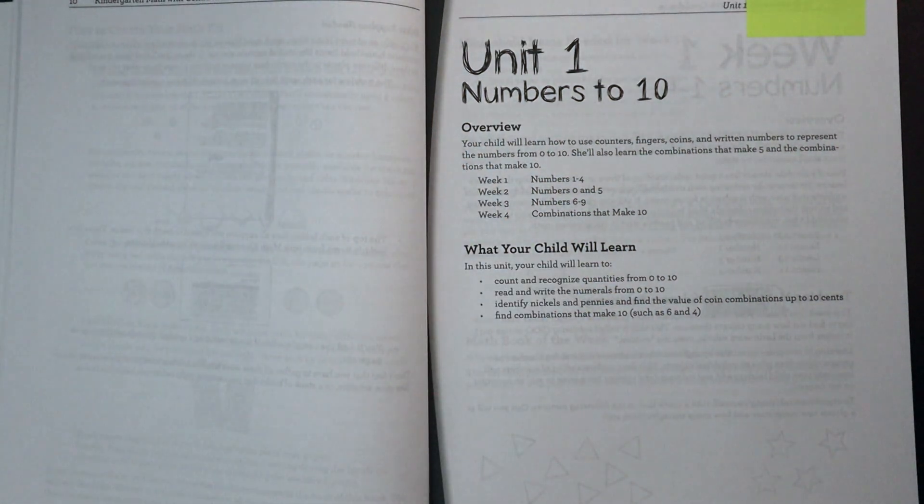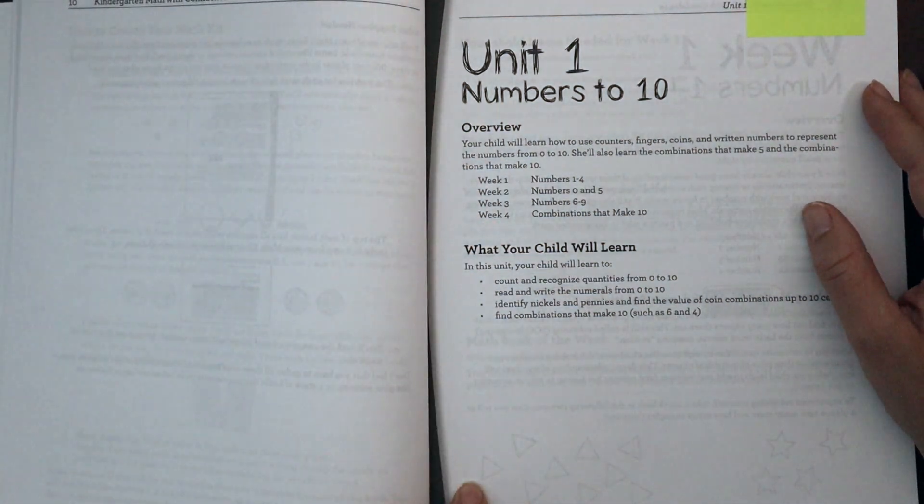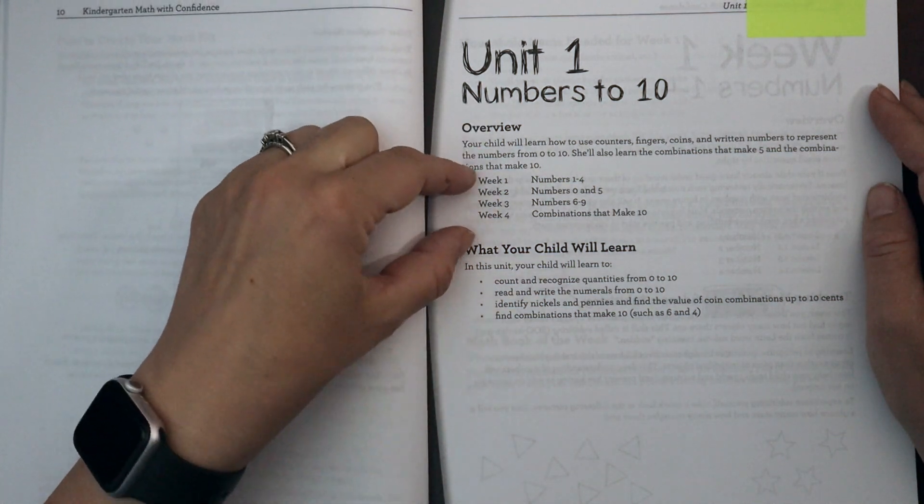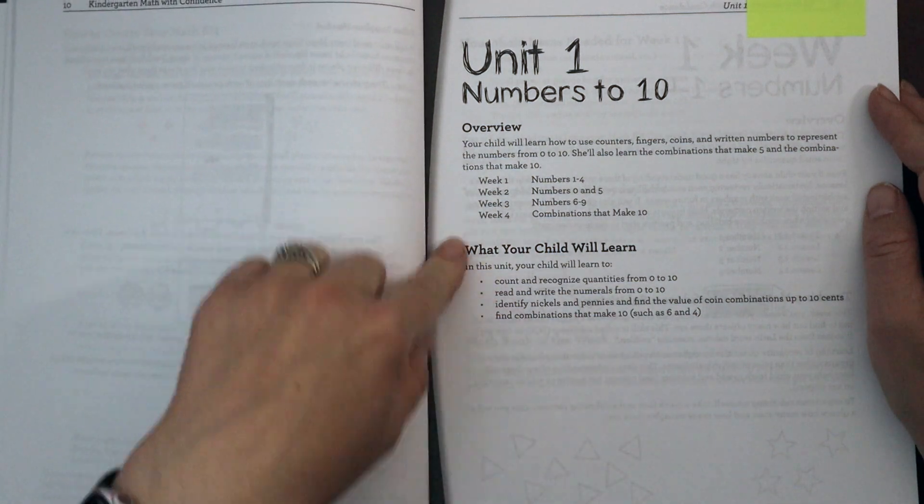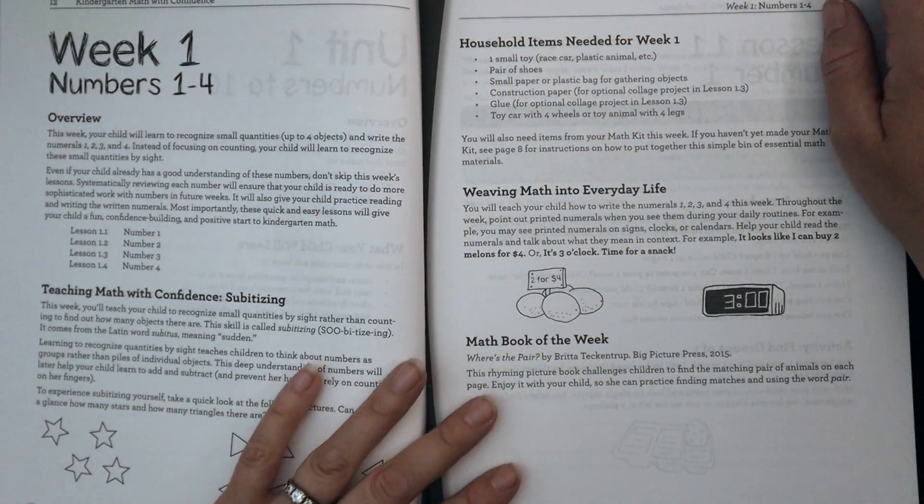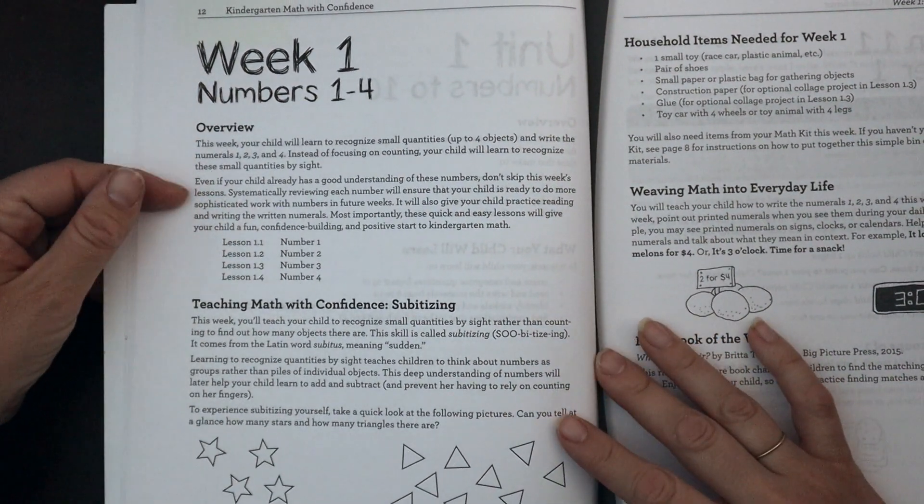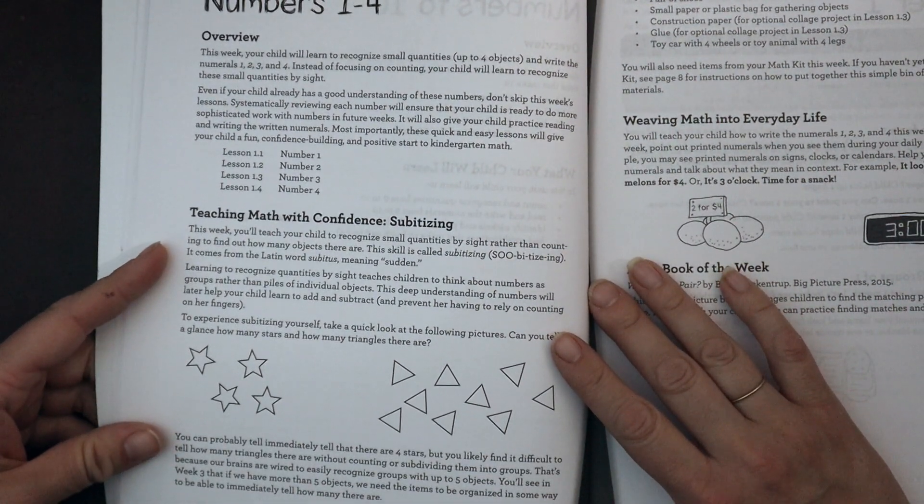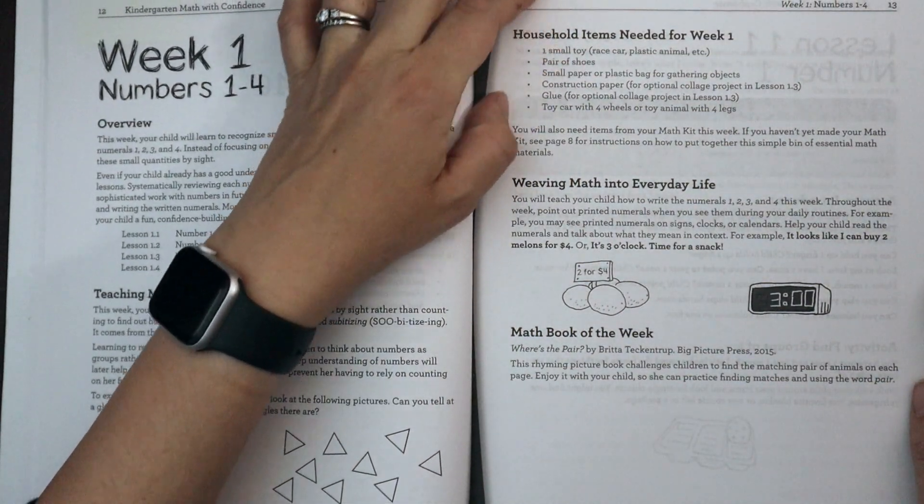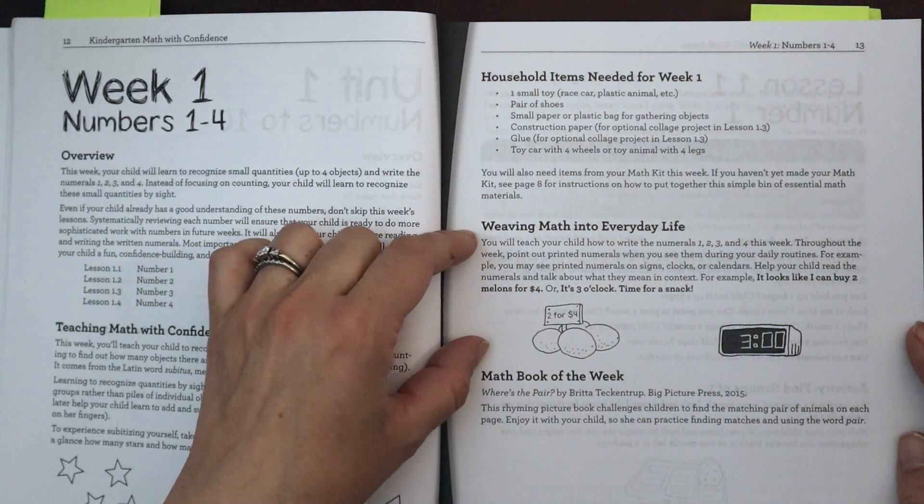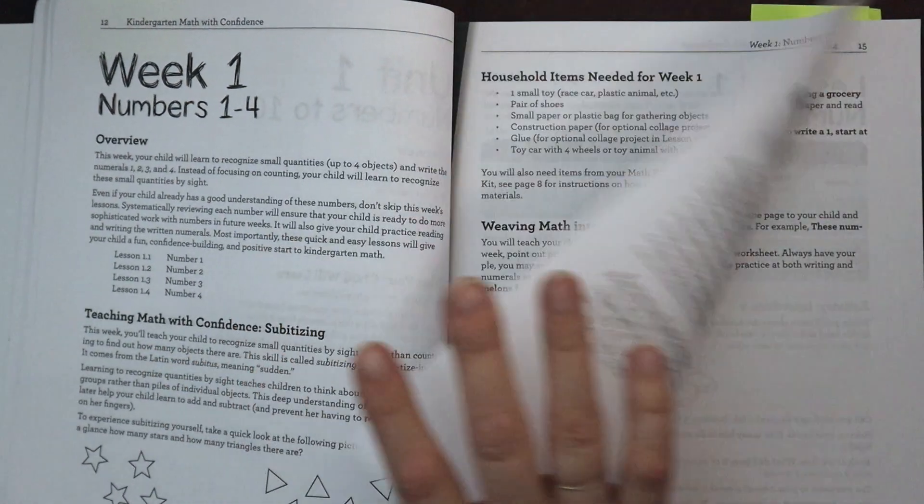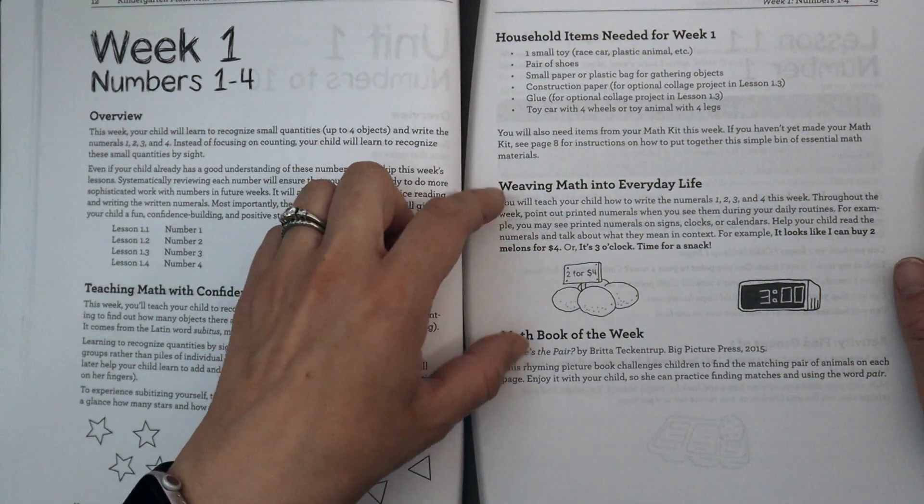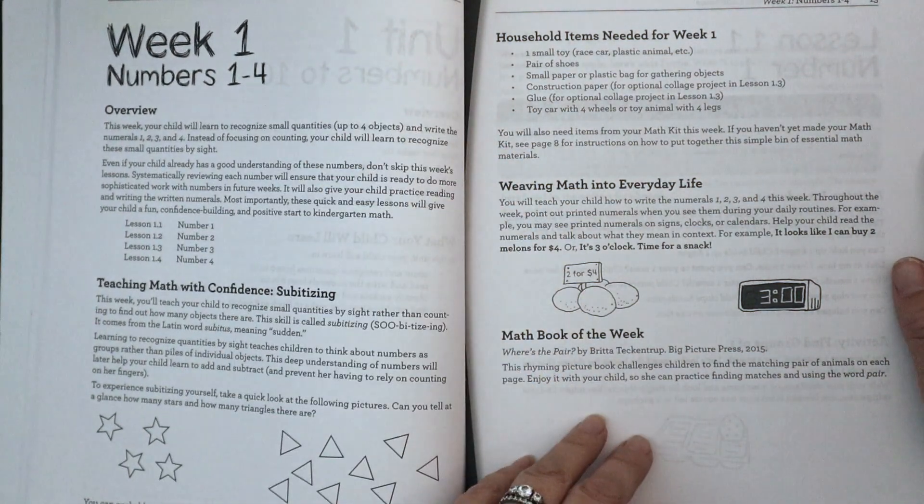All right, let's look at unit one. We begin every chapter the same way. We have an overview about what you're going to be working on. We have a breakdown of the different weeks and we have a little summary of what your child will learn. We then move into week one with an overview of the week, the different lessons that are in week one, the background information for you, the teacher, the household items you'll need, and then some ideas for weaving math into everyday life, and a book of the week. So if you notice there are four lessons in week one, and then this weaving math into everyday life, and the math book of the week are your like bonus lessons. So you could do that on your fifth day.